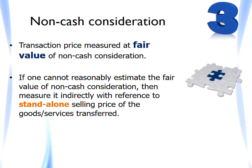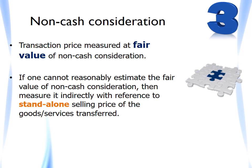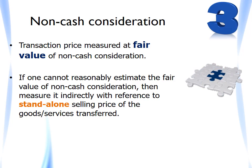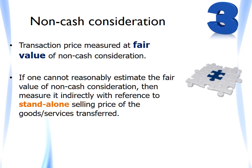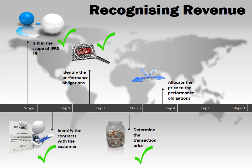Where consideration is in the form of something other than cash, the guidance is quite similar to today. The transaction price is measured at the fair value of the non-cash consideration received or receivable. If you cannot reasonably estimate the fair value, it should be measured indirectly with reference to the standalone selling price of the goods or services transferred. The last area in Step 3 is where there is consideration paid or payable to a customer — in general, this is to be deducted from the revenue number, unless the entity is receiving a distinct good or service from the customer in exchange.